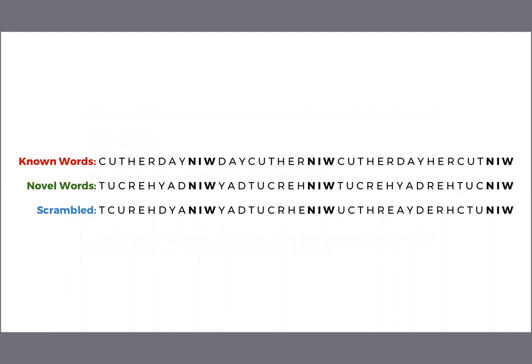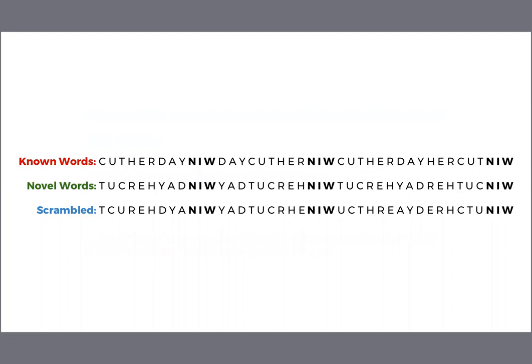So the only pattern in the scrambled condition is the N-I-W. In all three conditions, the appearance of an N is relatively unpredictable — many different letters can occur before an N. I and W, however, are perfectly predictable: if you know the pattern and see an N, you know that an I will be next, followed by a W. As people learn the patterns, we expect that their responses to I and W will get faster, but responses to N will not. We were interested in how the surrounding context — whether known words, novel words, or scrambled words — would affect the learning of the N-I-W pattern, which is the same in all three conditions.